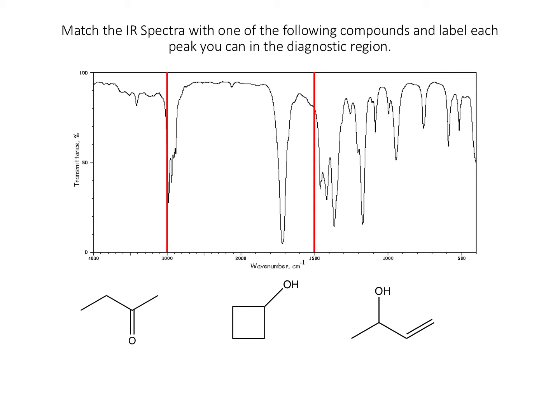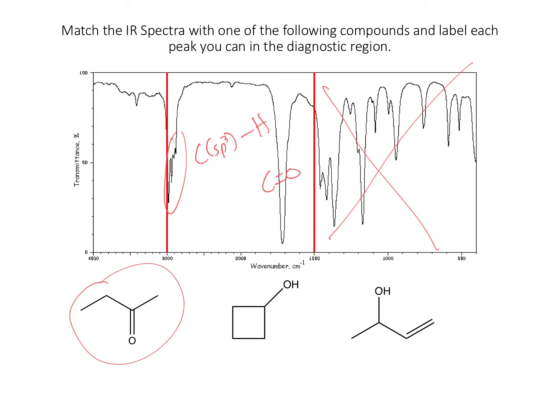Just like the last problem, we have a new spectrum but the same three molecules. When I analyze this spectrum, I'm going to ignore the fingerprint region, and in the diagnostic region I first look at my double bonds. I definitely have something in the double bond region — a fairly broad and fairly intense peak. This looks to me more like a carbon-oxygen double bond rather than a carbon-carbon double bond. I also see the almost ubiquitous SP3 hybridized CH stretch. The only molecule that has a carbon-oxygen double bond is this one, so that's probably the molecule.